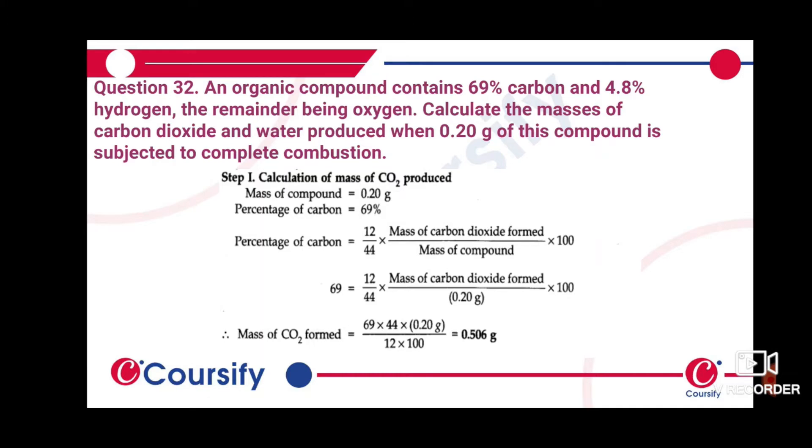Here we have an organic compound which is 69% carbon and 4.8% hydrogen and the remainder is oxygen. We need to calculate how much carbon dioxide is produced when 0.2 gram of this compound undergoes complete combustion.